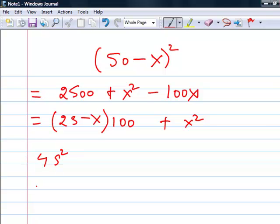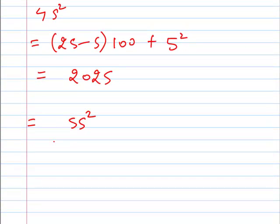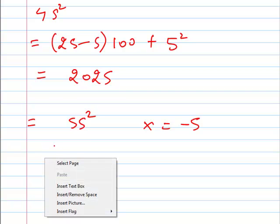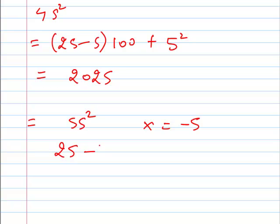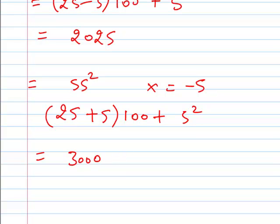Now, if I have to do 45 squared, it's simple. I have to write (25 minus 5) times 100 plus 5 squared. This is equal to 2025. Now, if I have to do 55 squared, then I set x equal to minus 5 and I get (25 plus 5) times 100 plus 5 squared, so that will be 3000 plus 25, equal to 3025.